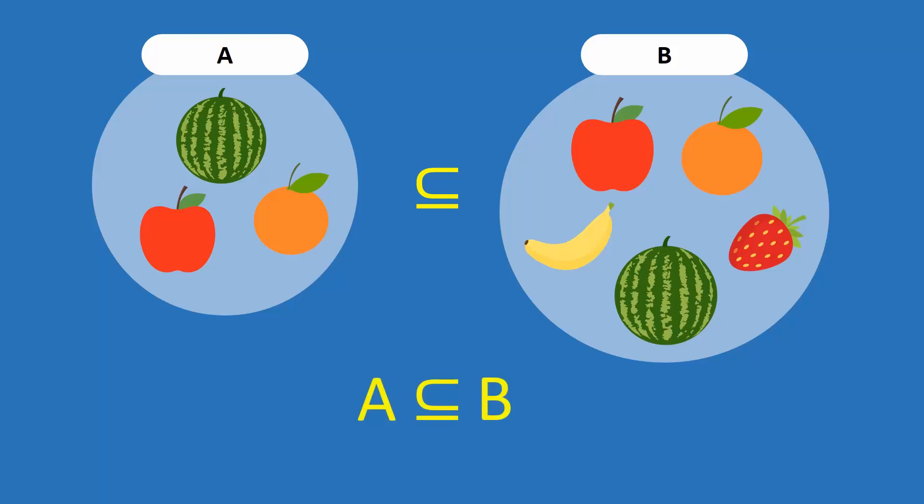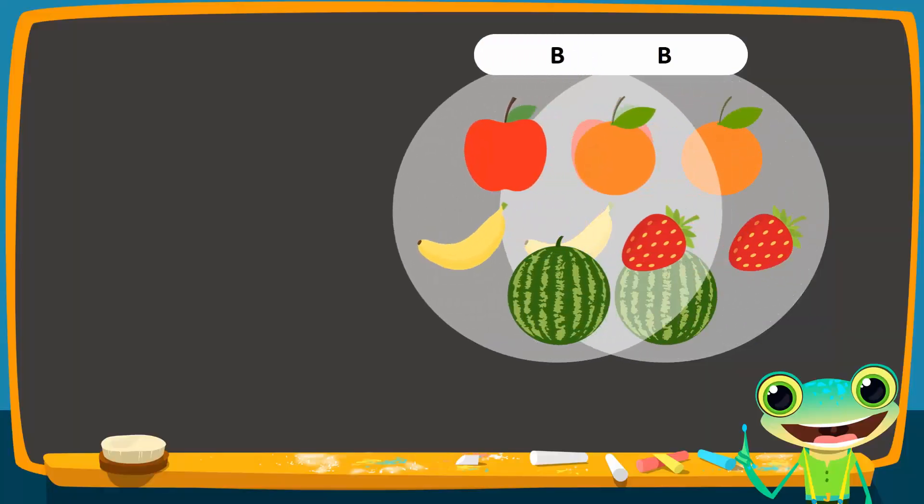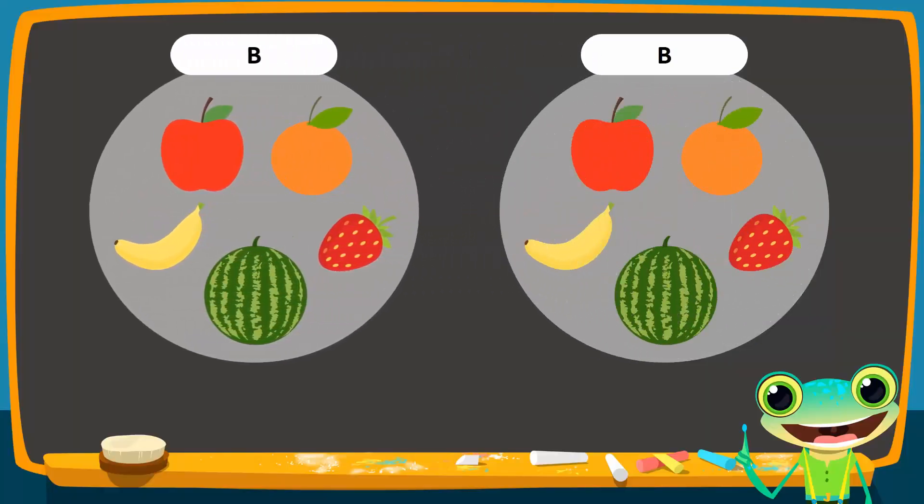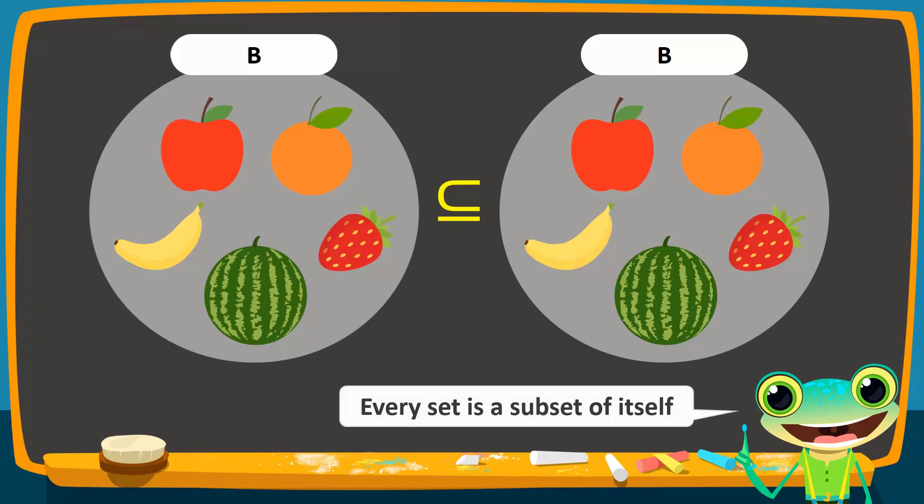Look again at set B. Now, let's duplicate it. Observe that each element of the duplicate set is contained in the original set. In other words, the duplicate set is a subset of the original set. Using this approach, we can see that every set is a subset of itself.